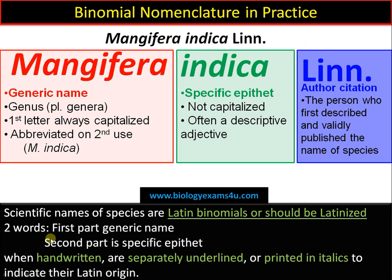Other rules in binomial nomenclature: scientific names of a species are Latin binomials, or should be Latinized irrespective of origin, made into Latin using the rules of that language. The name consists of two parts — the generic name and the specific epithet. When handwritten, each part should be separately underlined; in printed form, it should be in italics to indicate their Latin origin.